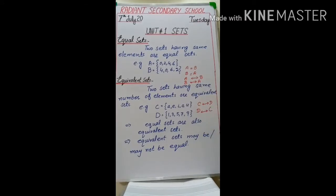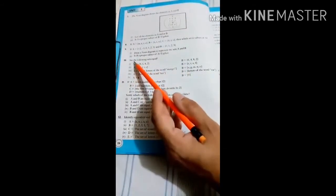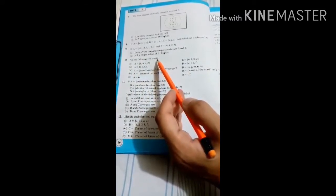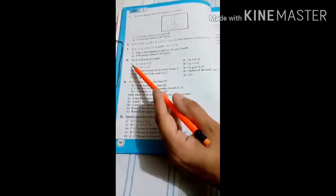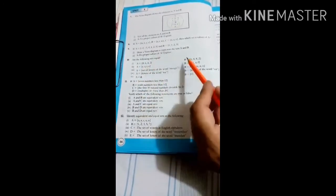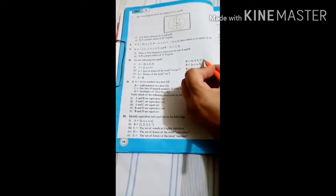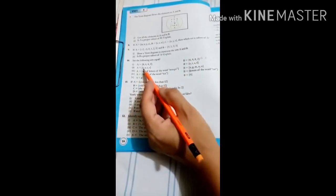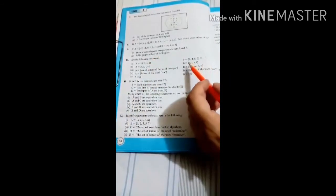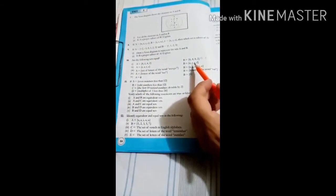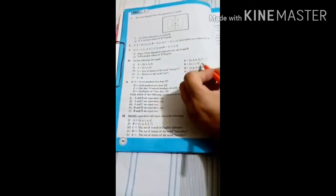Now we will do question number 10: are the following sets equal? Equal means the elements should be the same. Part one: set A has elements 8, 6, 4, and 2; set B has elements 6, 4, 8, and 2. The elements are the same, so set A is equal to set B. Part two: set A has elements R, A, T, E and set B has elements E, T, A, F. Elements E, T, and A are the same in both, but R and F are different, so set A is not equal to set B.